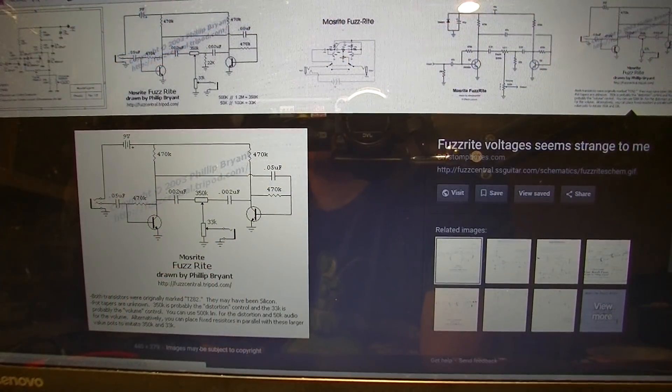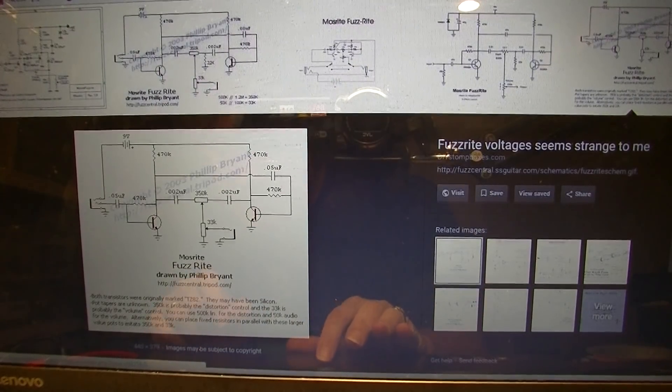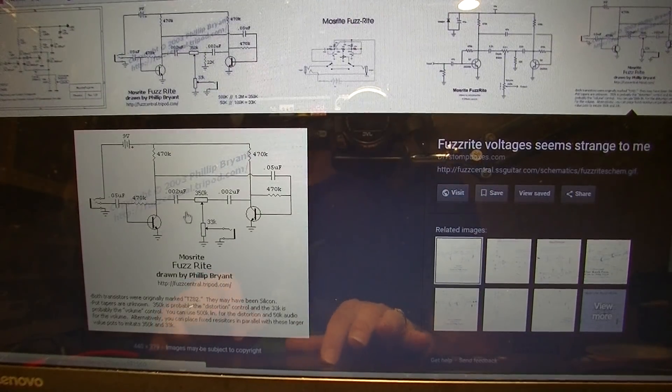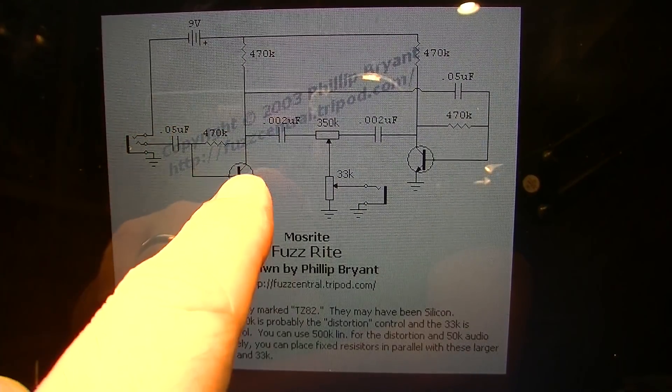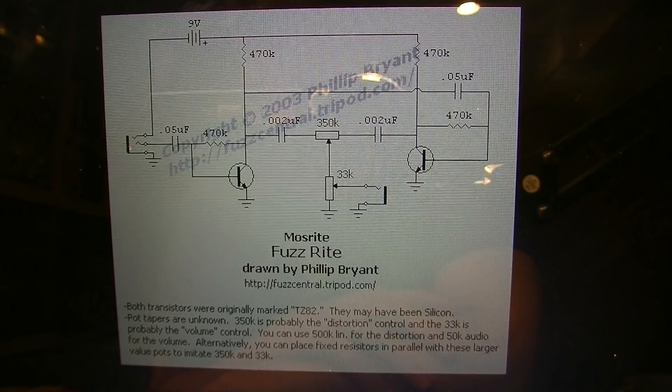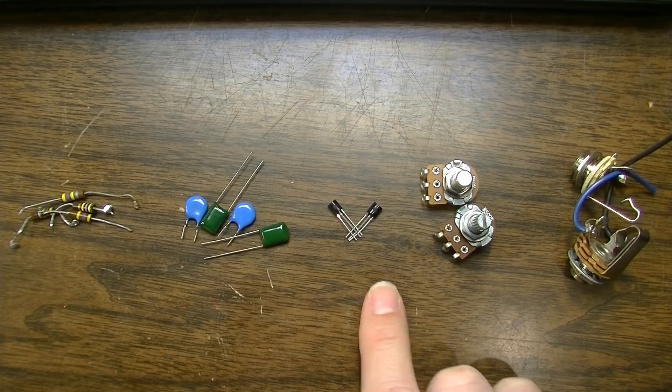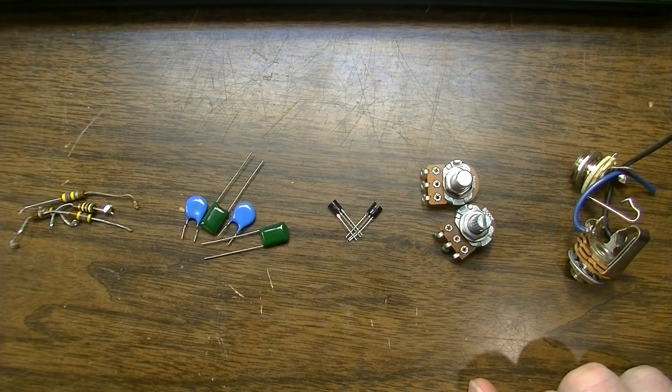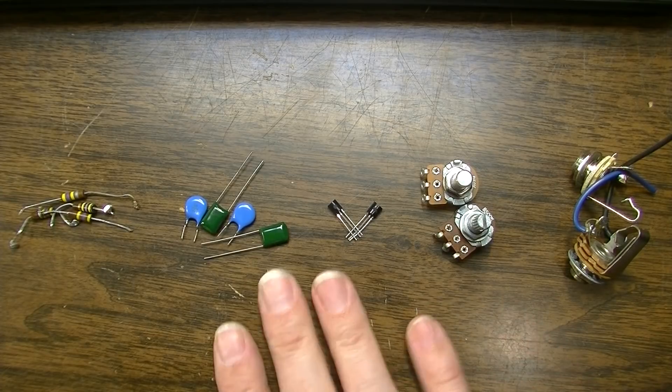All right. When you do a Google image search of the Moserite Fuzzrite schematic, you come up with several different ones. This one here drawn by a fellow named Phillip Bryant looks to be pretty legible to me. So we'll go with this one. So what we need to do is get a parts list off of this and basically accumulate all these parts together in one spot. And then we will breadboard it and put some power to it and see if we can make it work. Okay. So here are the parts we need. We need just four resistors, four capacitors, two NPN transistors, two potentiometers and two jacks. So let's go ahead and get these set up on the breadboard to get everything wired together and put some power to it.